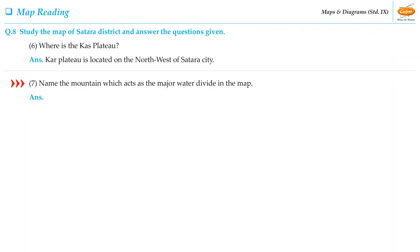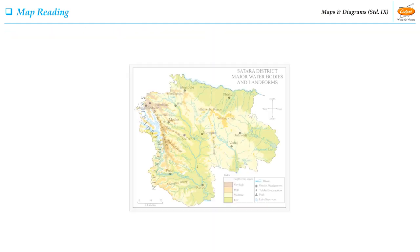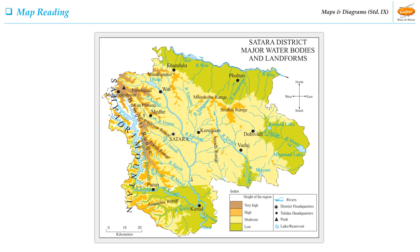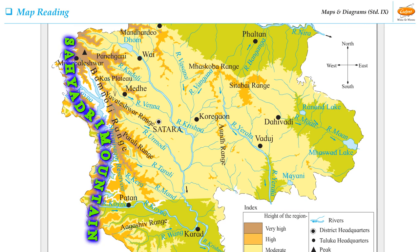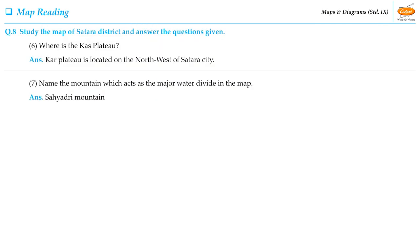Let us now see the last question of this activity: Name the mountain which acts as the major water divide in the map. The mountain which acts as the major water divide in the map is the Sahyadari Mountain. So students, with these questions, we have completed the map reading activity.